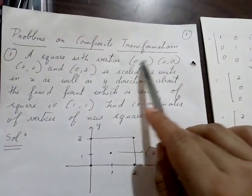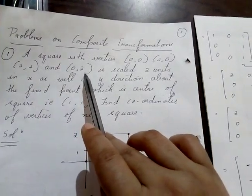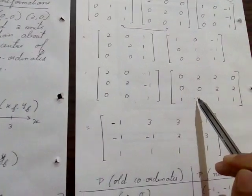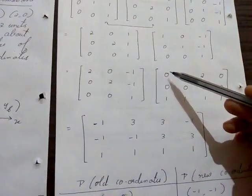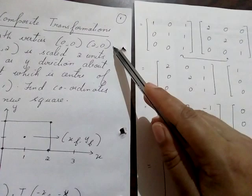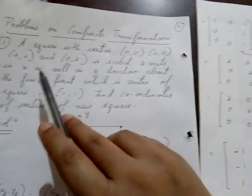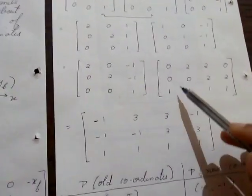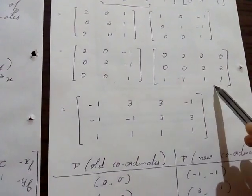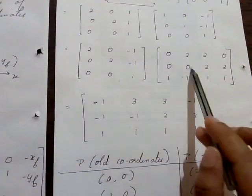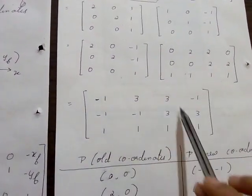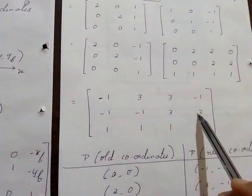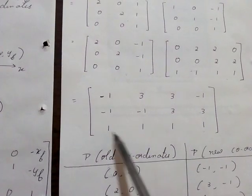The object coordinates — vertices 1 through 4 — need to be converted into three-dimensional homogeneous form. So put the vertices as rows: (0,0), (2,0), (2,2), and (0,2). The last column you put as 1 for all. After performing the multiplication of the resultant matrix with this object matrix, you get the final matrix. Consider only the first two values of each row — the last column is the homogeneous coordinate, which is 1.